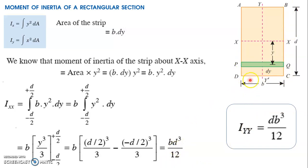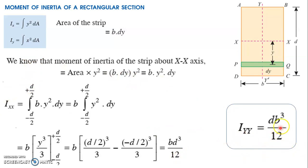The side parallel to the axis is taken as breadth, and the side perpendicular to the axis is taken as depth. So IXX = BD³/12. Similarly, you can derive IYY and you will get IYY = DB³/12, that is, depth times breadth cubed divided by 12.